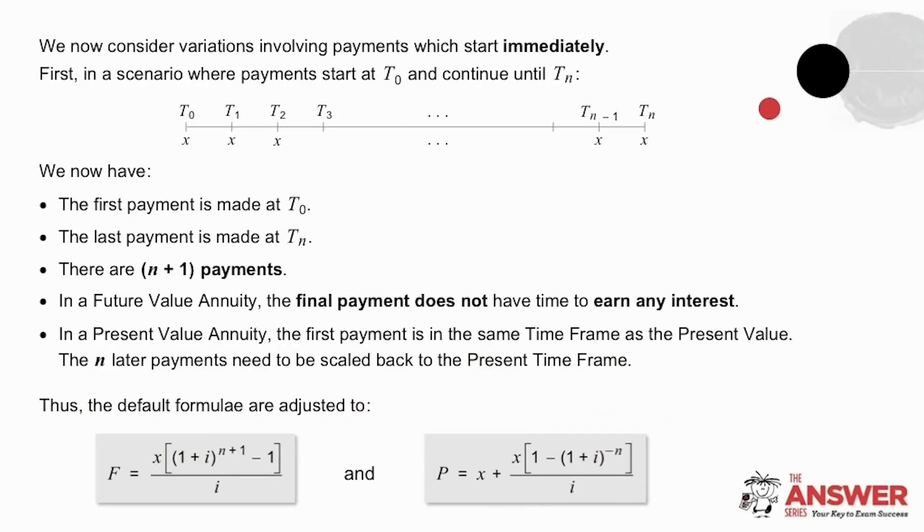Let's have a look now at some variations to these formulae. The first variation we are going to consider is when we start making payments immediately. In this situation, the first payment gets made at T0, the next at T1, and so on all the way up to TN. The result of this is that there is one extra payment. In other words, there will be N plus 1 payments altogether.